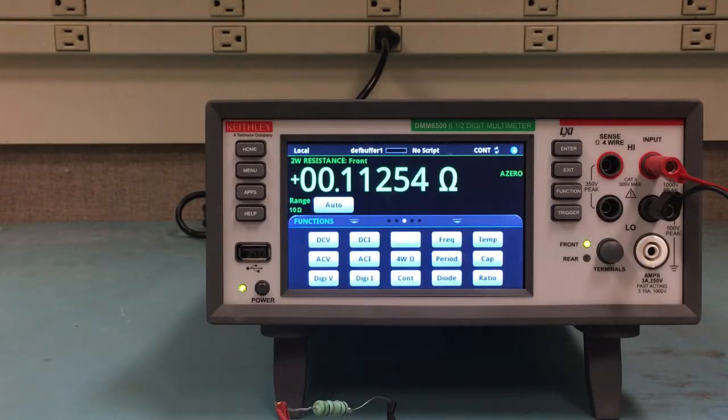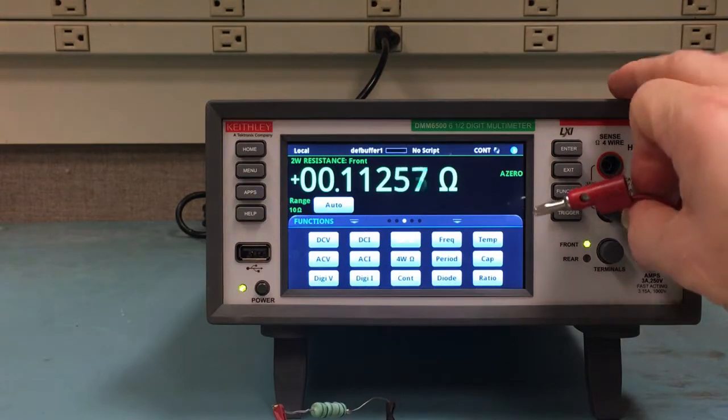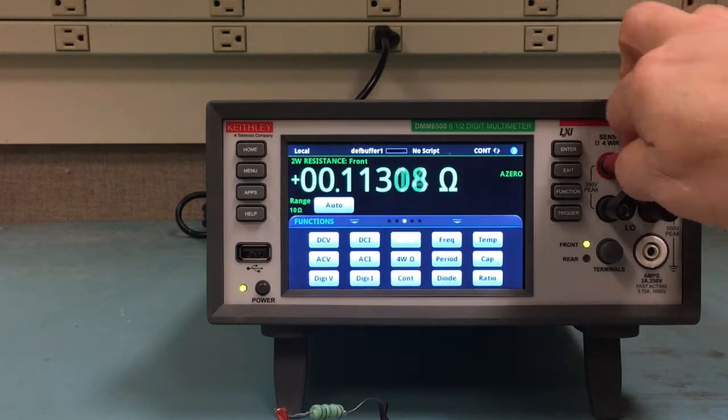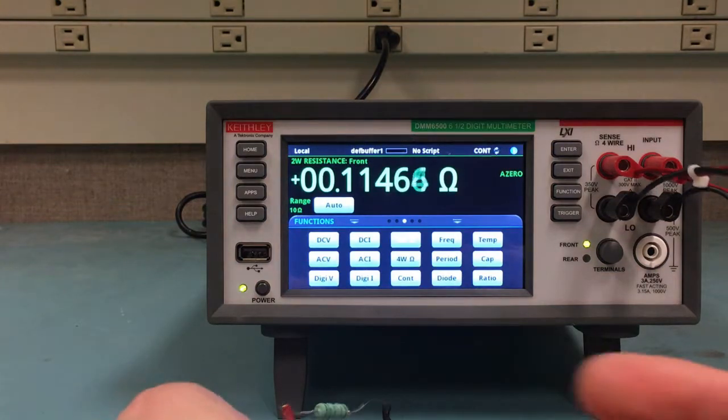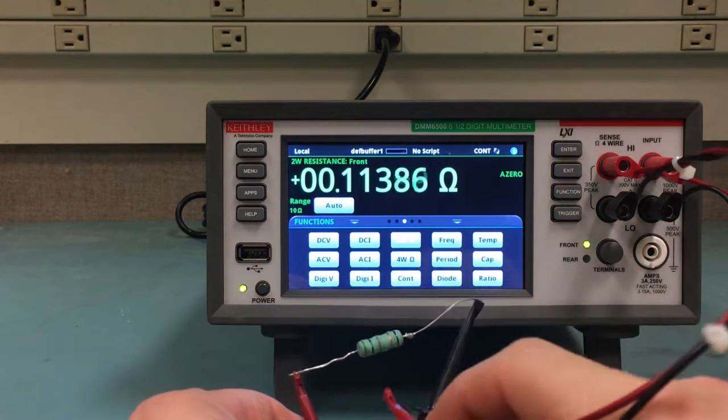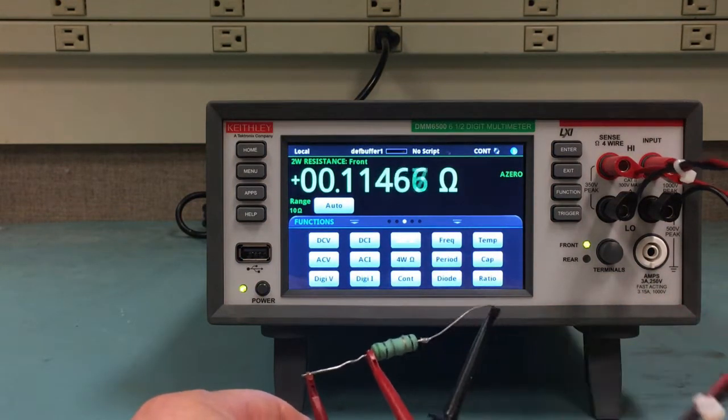Let's perform the four-wire measurement. The first step is to connect my second set of leads to the sense inputs on the front of the DMM6500. I then use those leads to clip very closely to the resistive body of my device under test.